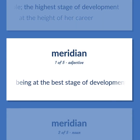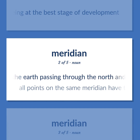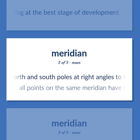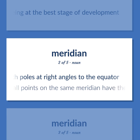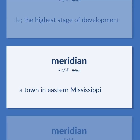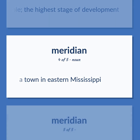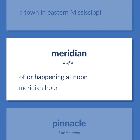Height: The highest level or degree attainable; the highest stage of development — at the height of her career. Being at the best stage of development. Meridian: An imaginary great circle on the surface of the earth passing through the north and south poles at right angles to the equator — all points on the same meridian have the same longitude. The highest level or degree attainable; the highest stage of development. A town in eastern Mississippi. Of or happening at noon — meridian hour.